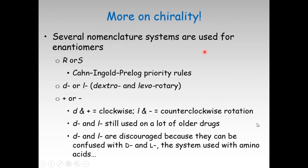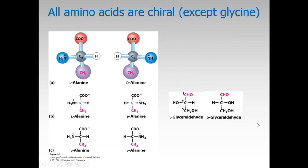Several nomenclature systems are used for enantiomers. R or S is based on Cahn-Ingold-Prelog priority rules, or small d or small l based on dextro and levo rotatory, or plus or minus. D and L still used on a lot of older drugs. The d and l are discouraged because they can be confused with the capital D and capital L, the system used with amino acids alone. So when it comes to amino acids, we will be using D or L amino acids and will not be using the small d and small l.